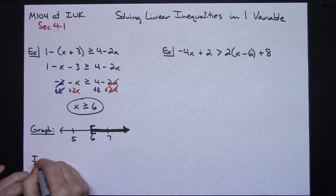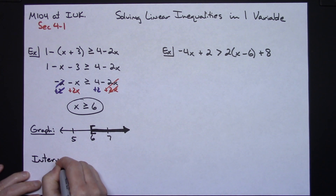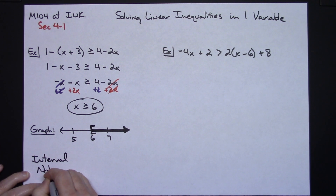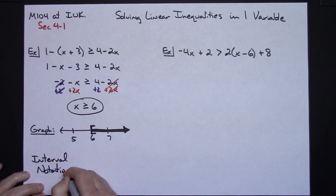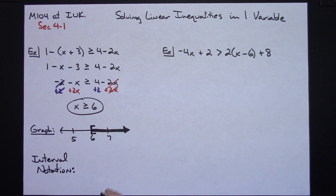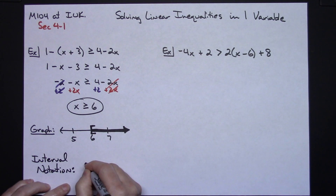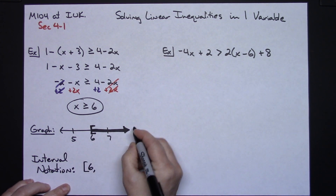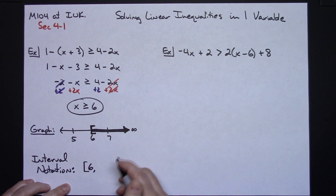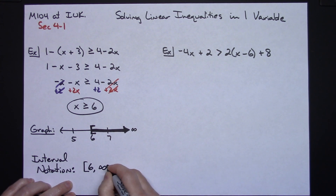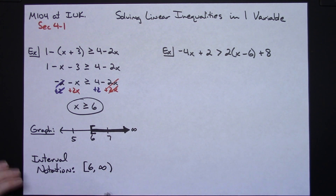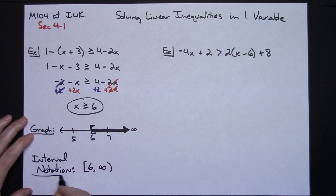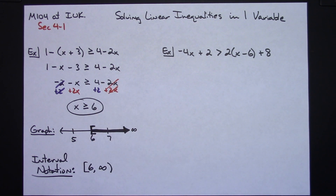If I wanted to write it in interval notation, and I have drawn my graph correctly, I'm going to have a square bracket on my 6, and then it's going to be all the numbers all the way up to positive infinity on the right-hand side of the number line, so positive infinity with a curvy bracket. So three different forms of how you can display your answer.